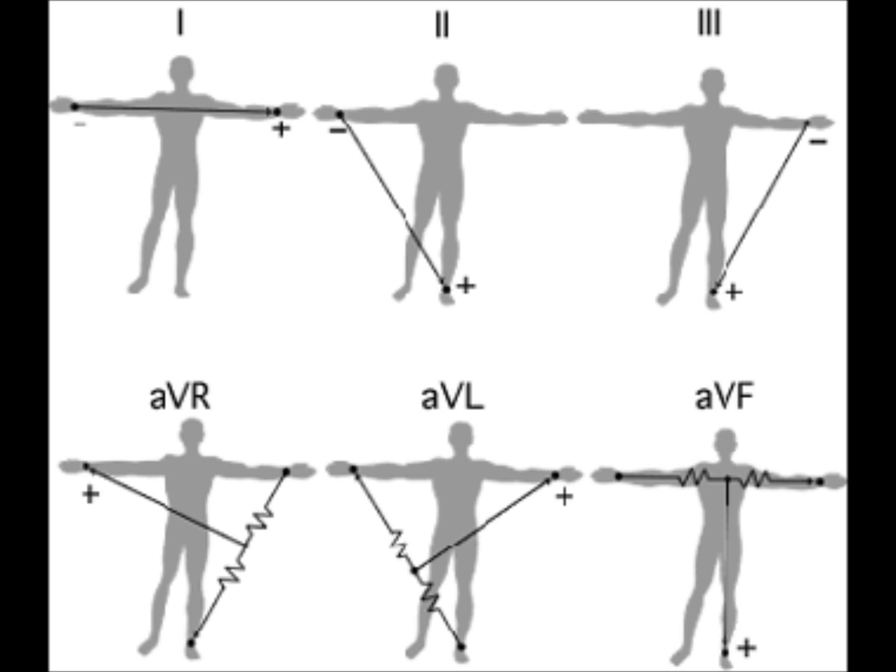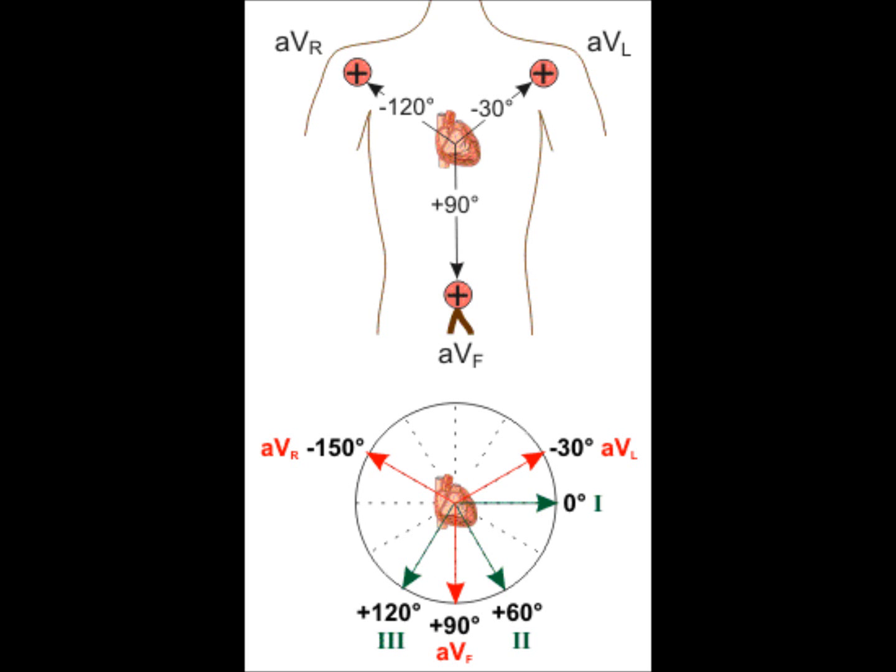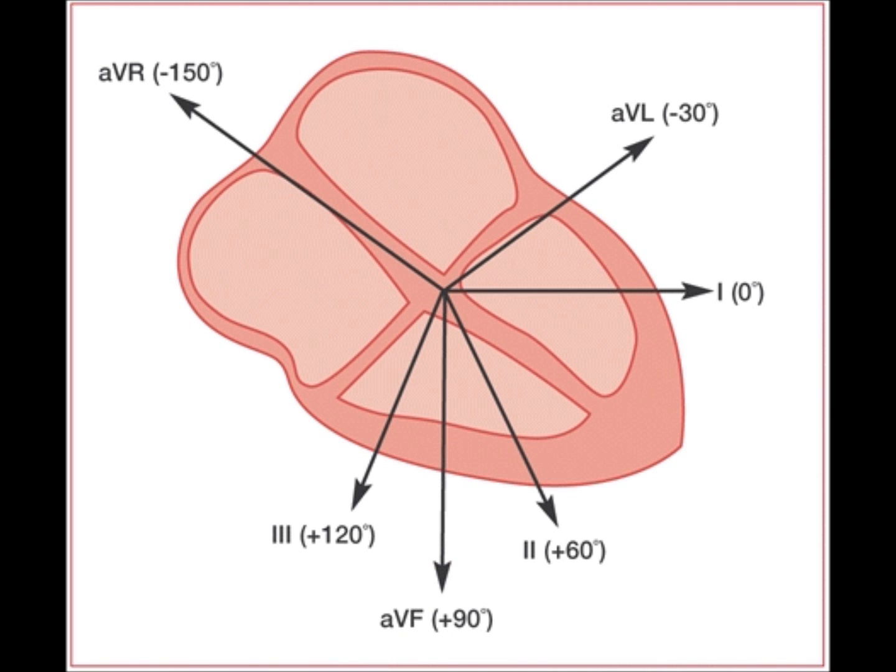These leads give us different views of the heart. For example, lead one, AVL, and the precordial chest leads V5 and V6 look at the lateral aspect of the left ventricle.